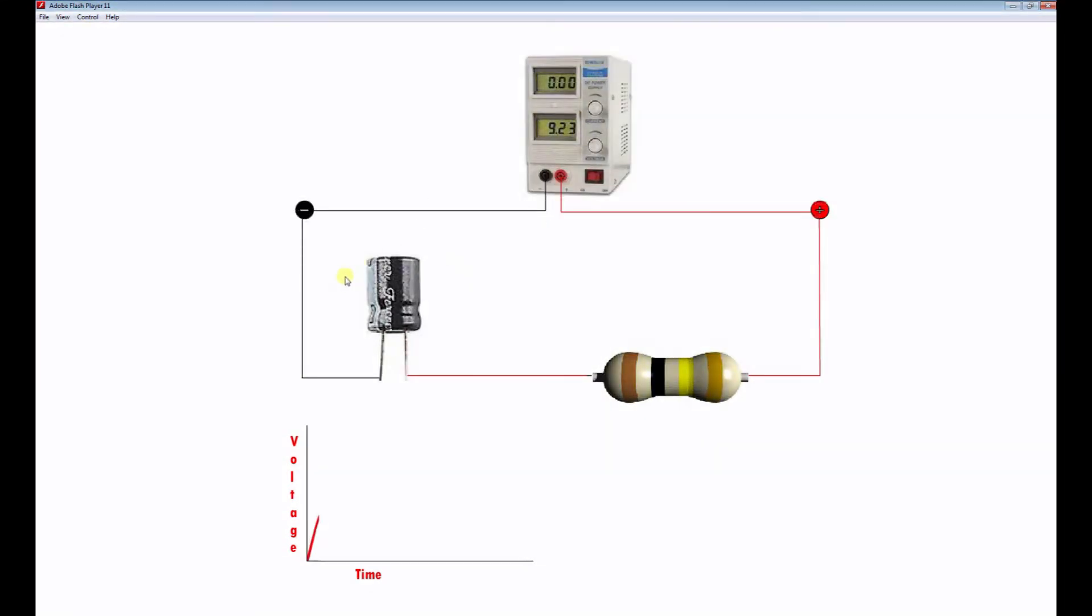A capacitor is nothing more or less than two metal plates separated by something called a dielectric. The dielectric is an insulator and therefore no current can flow through a capacitor. Any current flowing through a circuit that contains a capacitor is down to the charging and discharging of the plates of the capacitor itself.